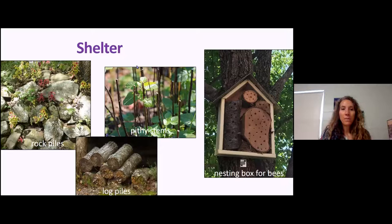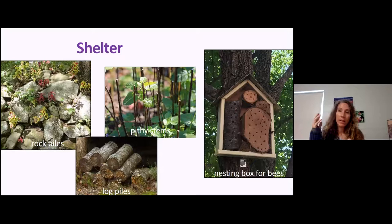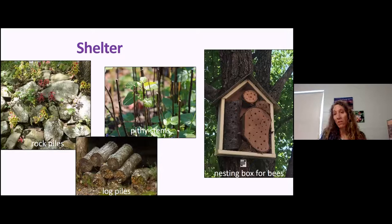Rock piles are great places for things like caterpillars to pupate — it's a little bit warmer, so it's a good place for hiding. Nesting boxes for bees: things like leafcutter bees and mason bees like to build nesting cavities. Where they would typically do this is in decaying wood — when wood borers bore holes into dying trees, these bees go in and build nests there. But we don't leave a lot of that in our urban areas; we quickly remove any decaying wood. So it's great if we can provide a resource for them. There are instructions from a UGA document on how to do this. You can get woodworkers involved, kids can check the nesting boxes throughout the year — I've got about four of these up in my yard and it's like a whole family adventure.